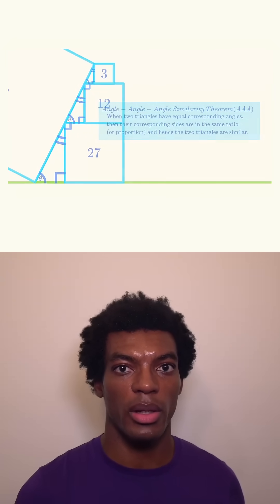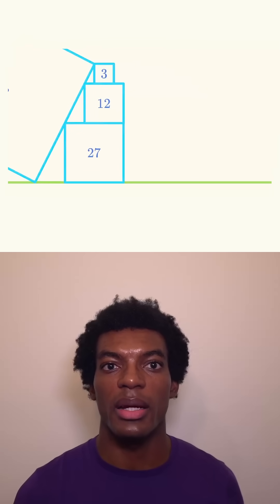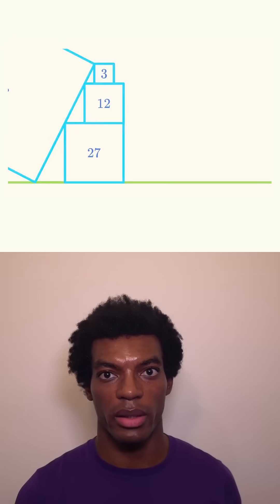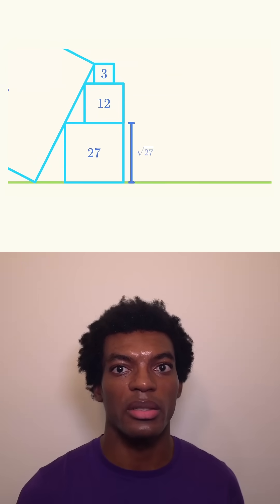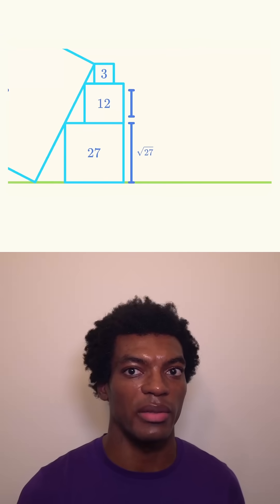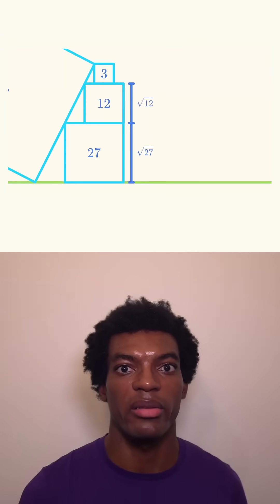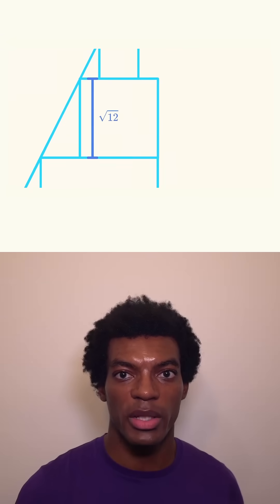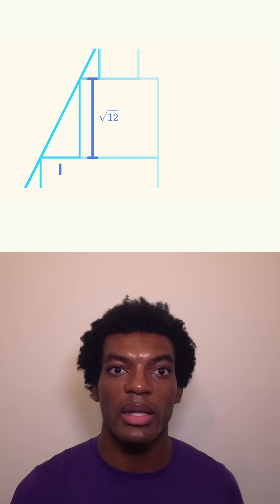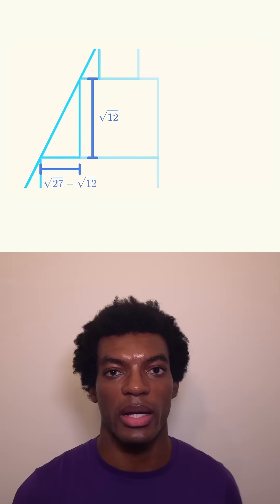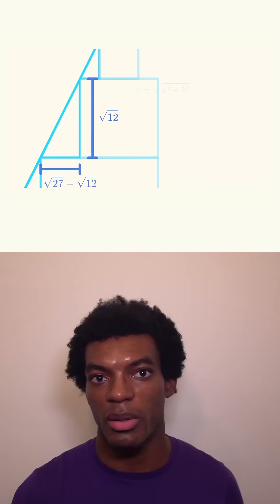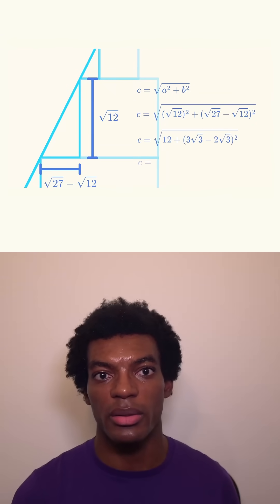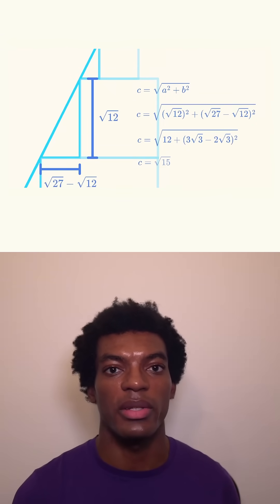Since we know the areas of the squares, we can find their side lengths by computing the square root of their areas. The side length of the bottom square is the square root of 27, and the side length of the middle one is the square root of 12. With these two measurements in hand, we can get the lengths of both legs of the middle triangle. A simple application of the Pythagorean theorem reveals that the length of its hypotenuse is the square root of 15.